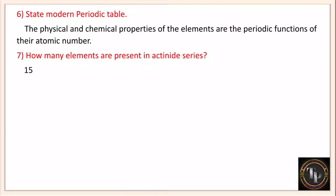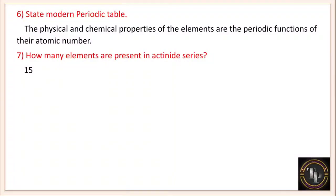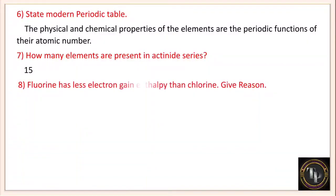How many elements are present in the actinide series? 15 elements are present. Lanthanides and actinides are the f-block elements. The lanthanide series starts from lanthanum: lanthanum, cerium, praseodymium, neodymium, promethium, samarium, europium, gadolinium, terbium, dysprosium, holmium, erbium, thulium, ytterbium, and lutetium. The actinide series: actinium, thorium, protactinium, uranium, neptunium, plutonium, americium, curium, berkelium, californium, einsteinium, fermium, mendelevium, nobelium, and lawrencium. Both series have 15 elements each.